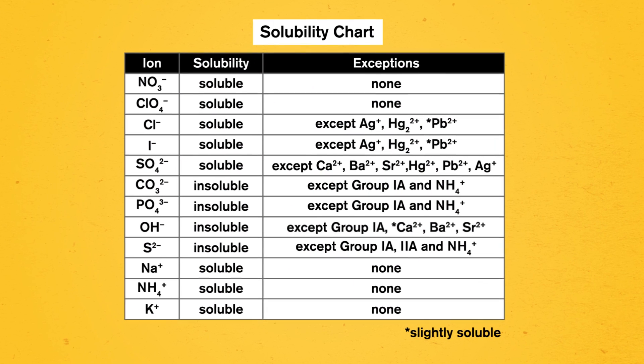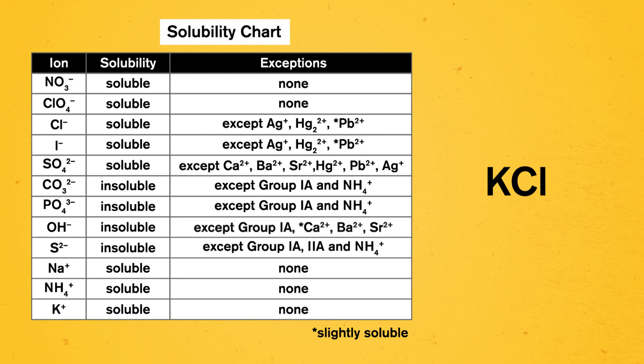Things might get more complicated when we start looking at compounds, but don't worry — as any scientist would love to tell you, we have a chart for this. It's called a solubility chart, and it'll save us the headache of memorizing the solubilities for each individual compound. Solubility charts list the solubilities of common substances, and there are lots of versions set up in varying formats. For example, if we wanted to know the solubility of potassium chloride, let's use special ion vision glasses to split up the compound.